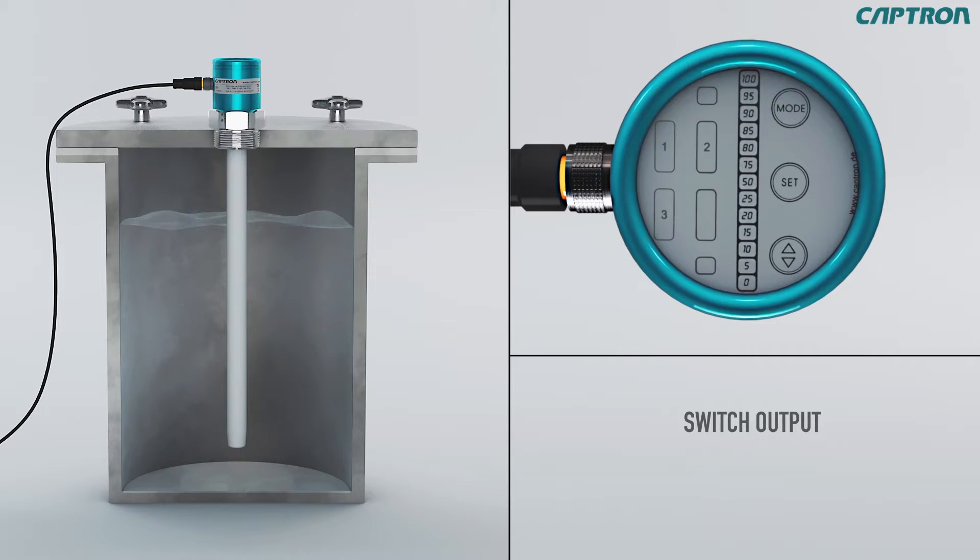Setting the switch output PNP1. The 0 and 100% displays will light up once again, as well as the NO or NC display for PNP1. NO stands for normally open, and NC for normally closed contact. You can set NO or NC with the up down button. Confirm your adjustment with set.